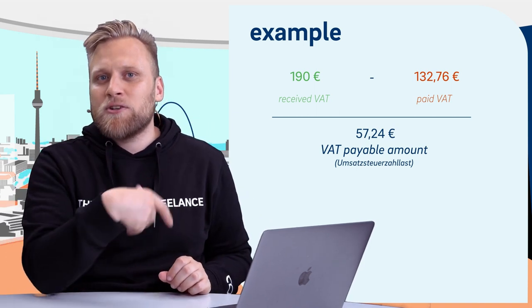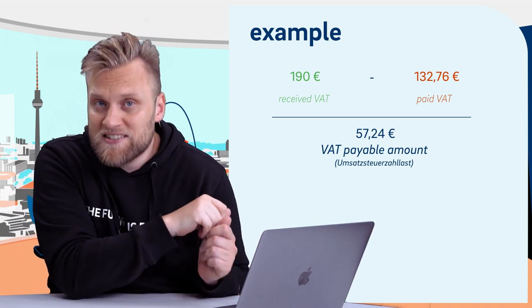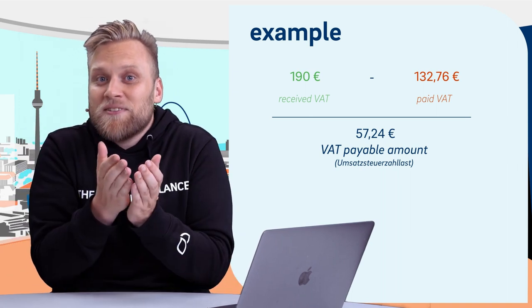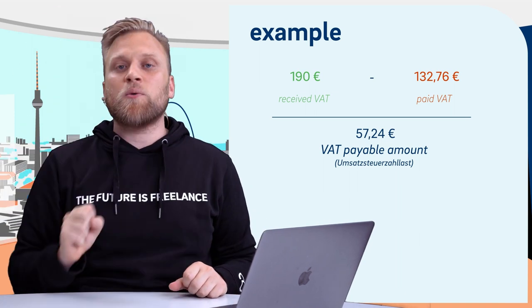This calculation — VAT minus input tax — gives either a tax liability or a refund claim, and it's essentially the main reason you do your accounting. You must do this for specific time periods: monthly, quarterly, or annually, depending on your prior year's VAT liability. The tax office examines last year's liability and determines your advance return frequency. If your total liability was low, once a year is sufficient; if it was moderate, quarterly; and if it was high, you must file monthly.